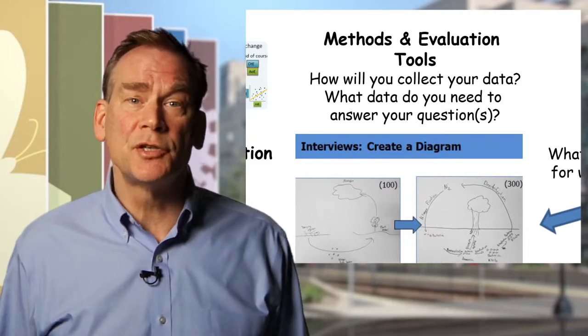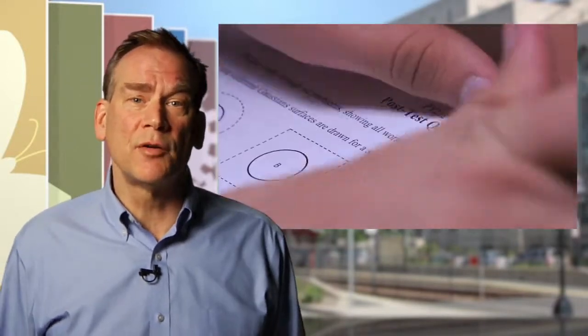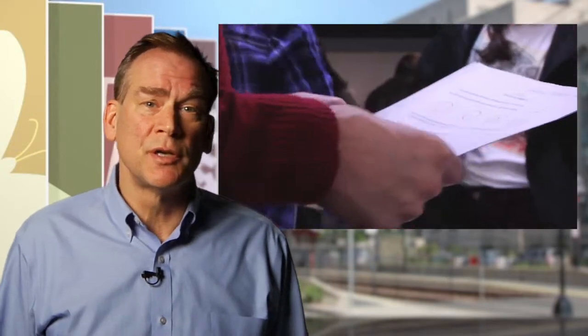Having developed an intervention, you will then go and do it — whether it's in a classroom, learning community, or learning through diversity environment. You'll look at student learning outcomes, attitudes, what faculty do, changes in practice, changes in learning outcomes. Whatever you've designed as your intervention, you will perform it and collect the data that's part of your evaluation metric.